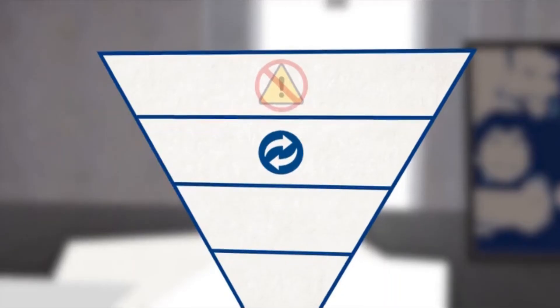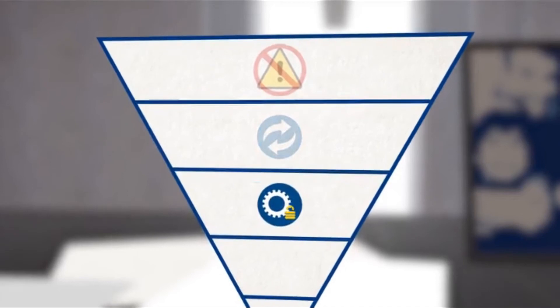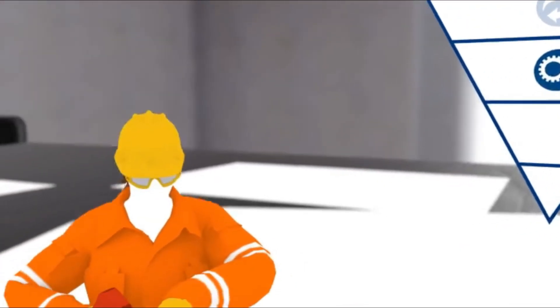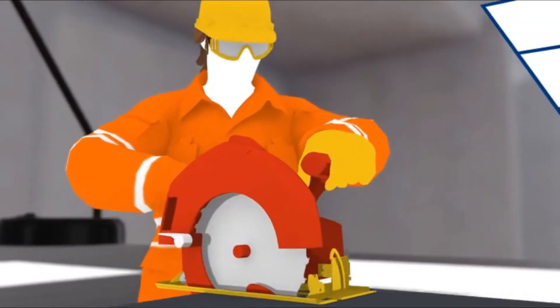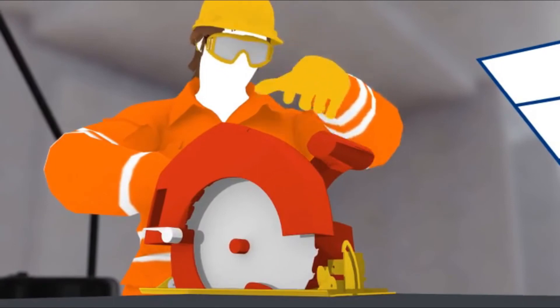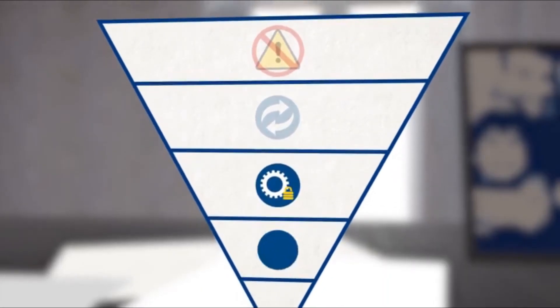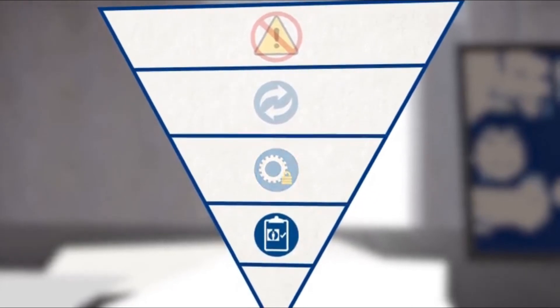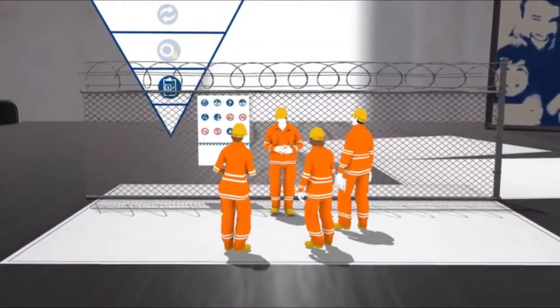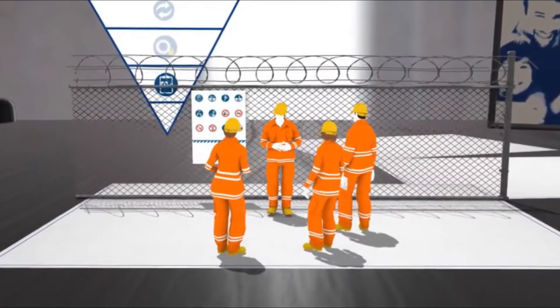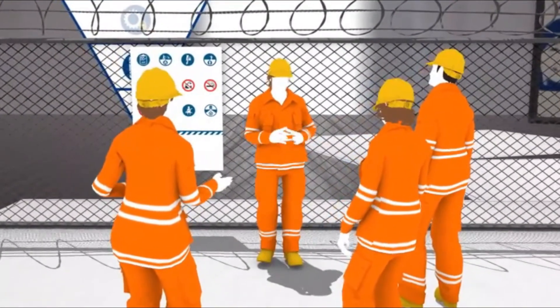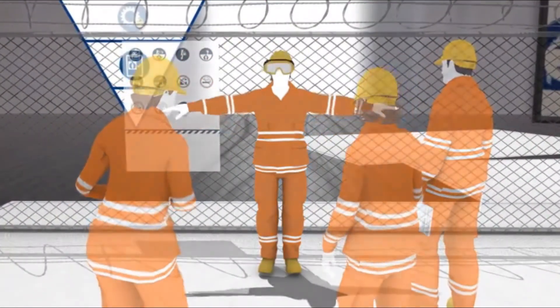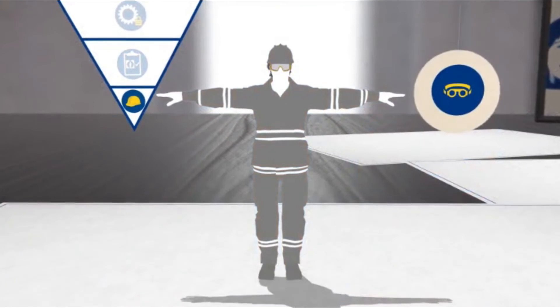The next level down is engineering controls. If substitution is impossible, can you make sure that people are physically separated from the hazard and kept out of harm's way? The next step down is administrative controls. These are the rules and procedures and the training and information that makes people both aware of the hazards and how to avoid them. And finally, at the lowest level is PPE. It is still vitally important, but it is the least effective way of protecting people from hazards.